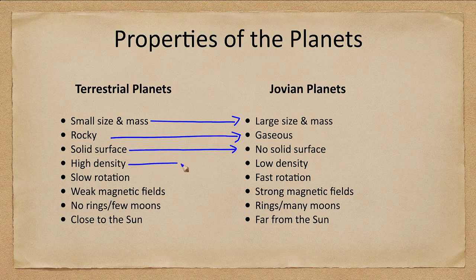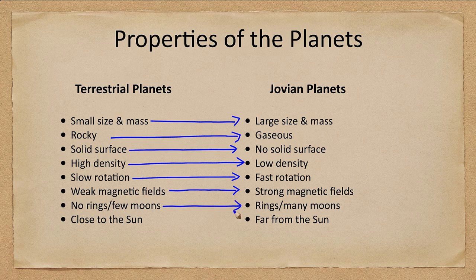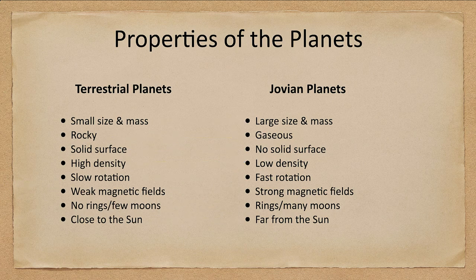Terrestrial planets have a high density while the Jovian planets have a low density. The terrestrial planets rotate slowly, the Jovian planets fast. Magnetic fields are very weak on the terrestrial planets but very strong on the Jovian planets. Terrestrial planets have no rings and hardly any moons, while each Jovian planet has a ring system and a good system of moons as well. And finally, terrestrial planets are close to the sun while the Jovian planets are far from the sun.